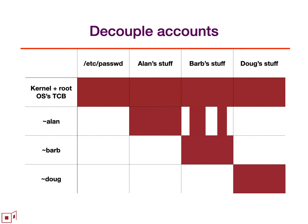Operating systems rapidly invented the notion of separate user accounts where Alan had access to Alan's stuff, Barb had access to Barb's stuff, Doug had access to Doug's stuff, and Barb could share some of her stuff with Alan. The first row is the operating system kernel, or the TCB. For all of the resources managed by the operating system, the OS itself is the mechanism that controls the access that the other accounts have to those resources. Therefore, a flaw in the operating system places all of those resources at risk.